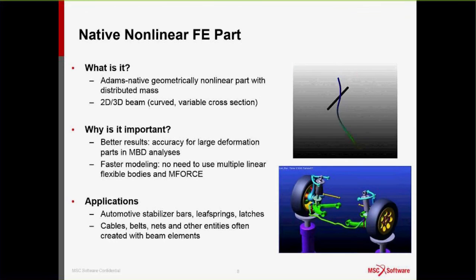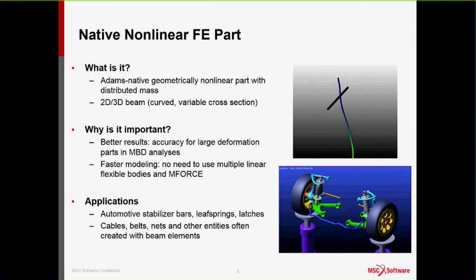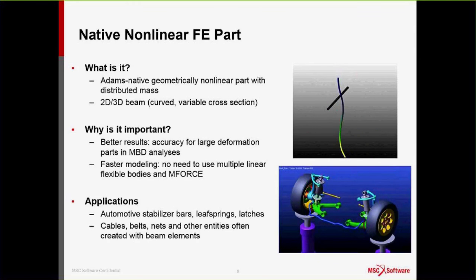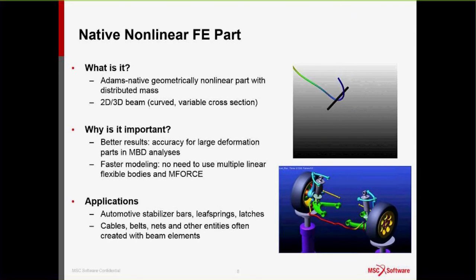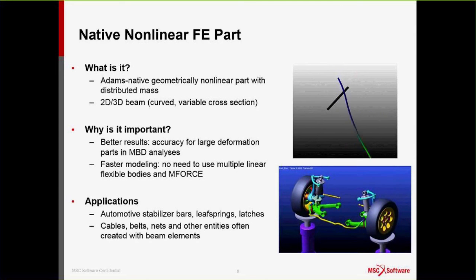Starting with FEPART — a native element within ADAMS, it's a 2D and 3D beam element for geometric nonlinearity only, not material. As shown in the graphic, this highly flexible element is capable of wrapping itself around a rigid bar, so it handles very high levels of geometric nonlinearity. Applications include sway bars, leaf springs, door latches, and coil springs — essentially any body that can be simulated with a 2D or 3D beam.